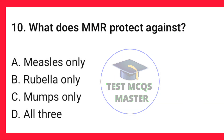Question number 10. What does MMR protect against? The correct option is D — all three (measles, mumps, and rubella).